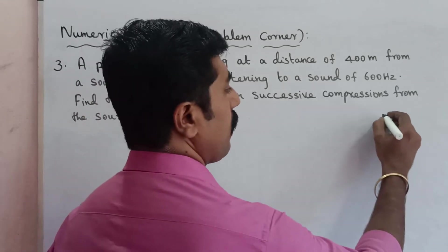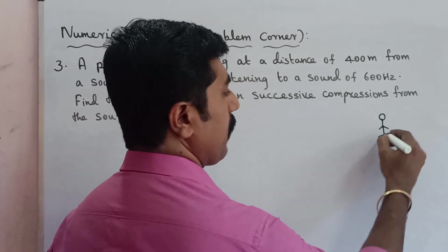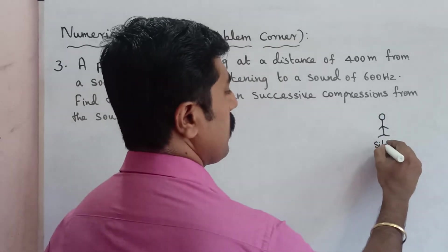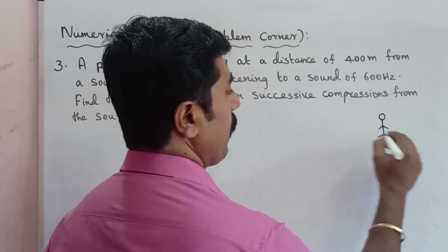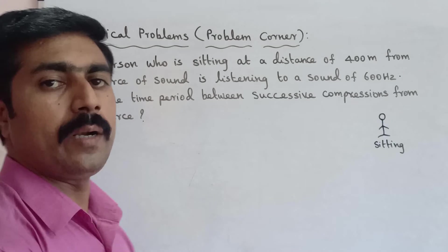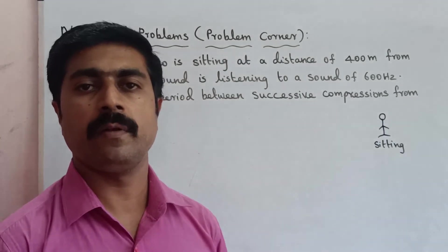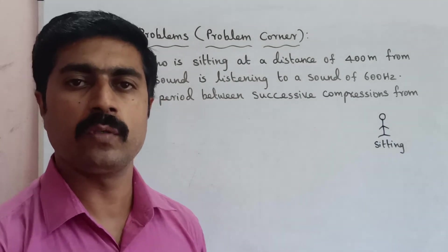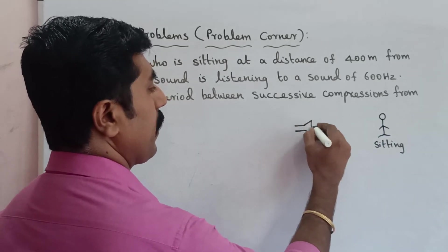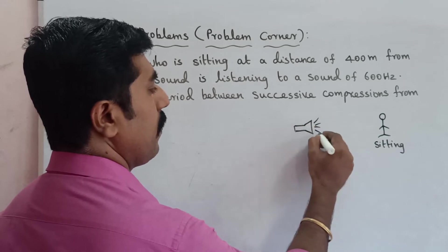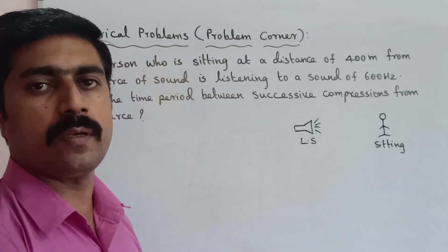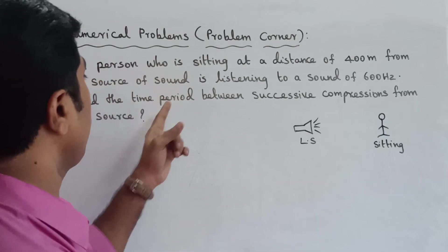So one person and the source are at one place. Looking at the diagram, the source of sound — for example, a loudspeaker — delivers sound. The loudspeaker is the source of sound that delivers the sound wave.